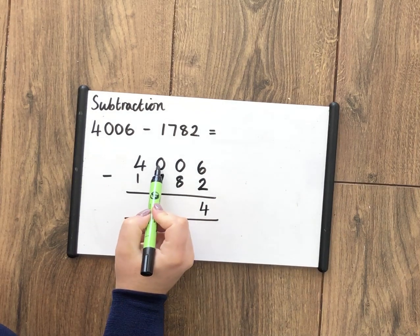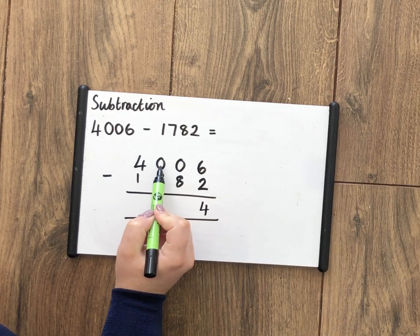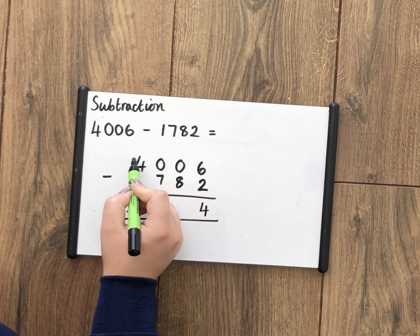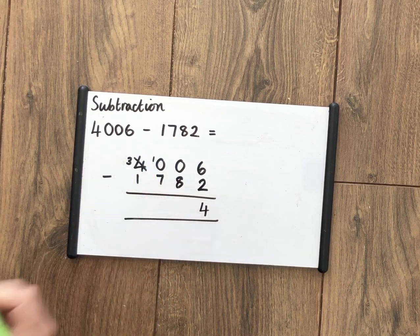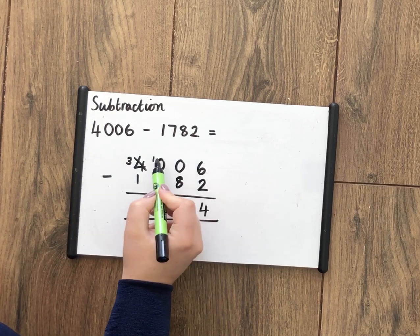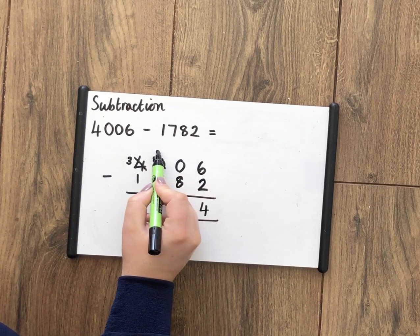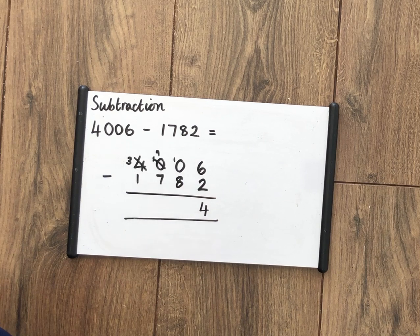I can't quite borrow from this neighbor, so I need to borrow again from the other neighbor. I can borrow from that one. So I can make that neighbor a 3 and make that a 10. Now I can borrow, so I can make that a 9 and make me a 10.